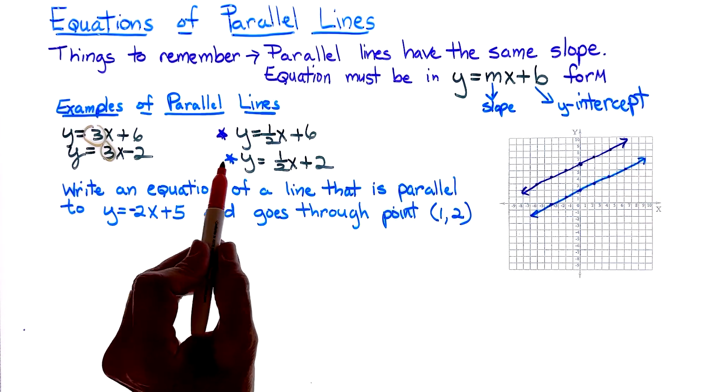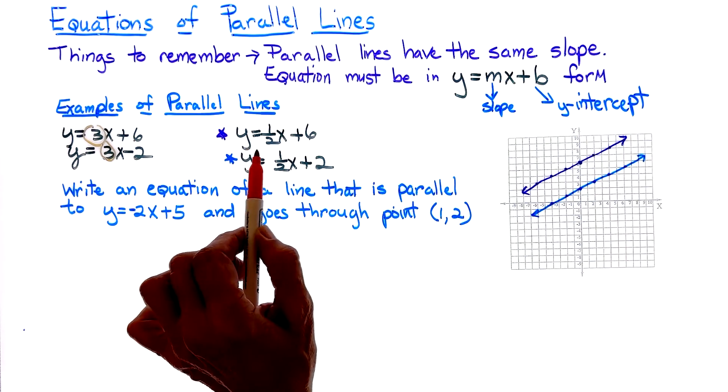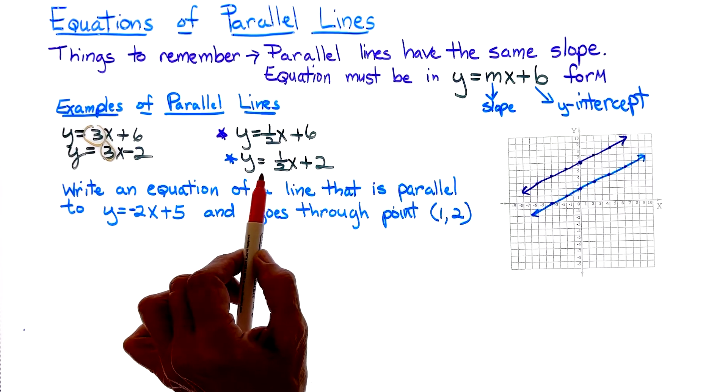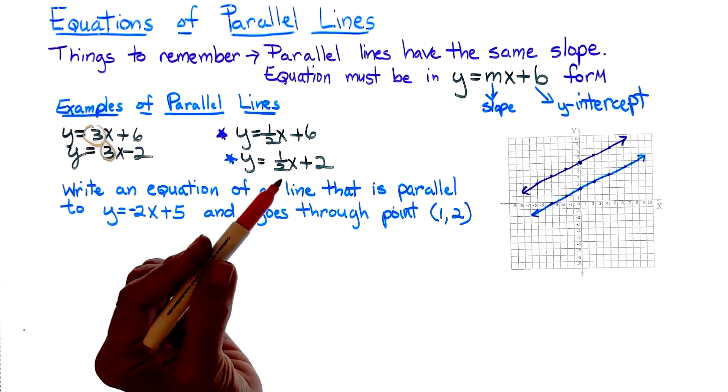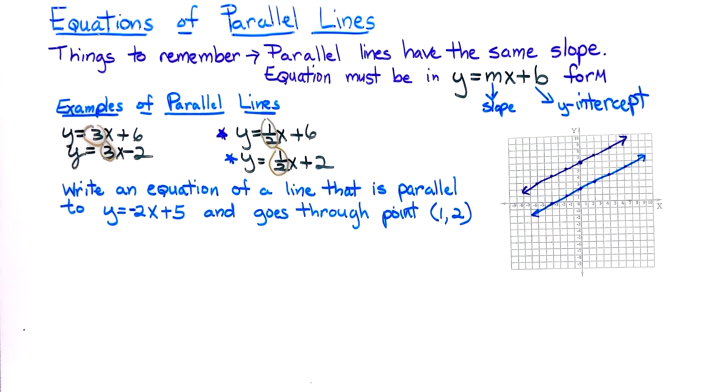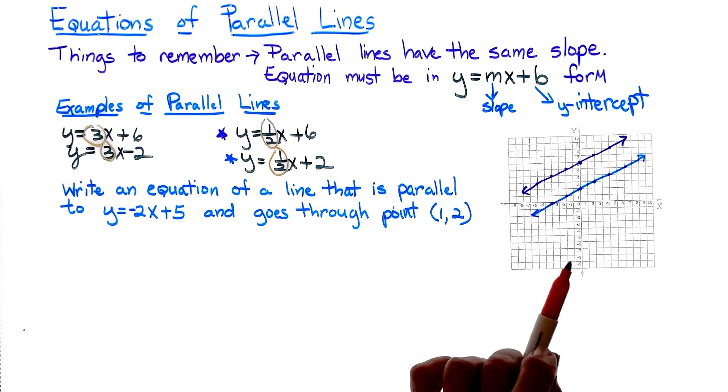Looking at a second example that I actually have graphed off to the side here, y is equal to 1 half x plus 6, and y is equal to 1 half x plus 2. So again, we know they are parallel because they have the same slope, but notice the y-intercepts are different.